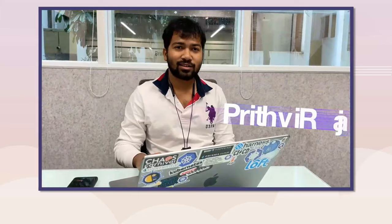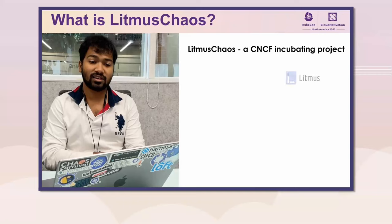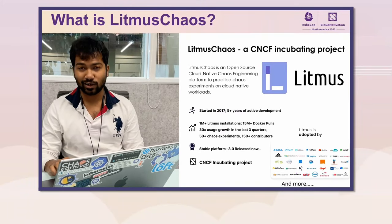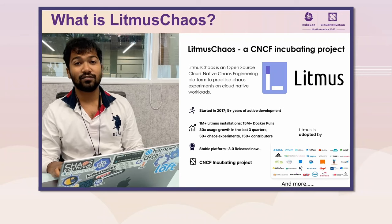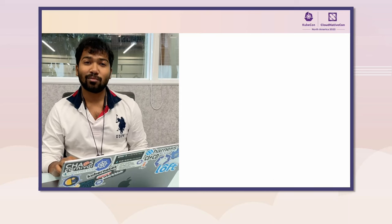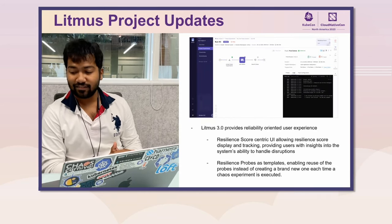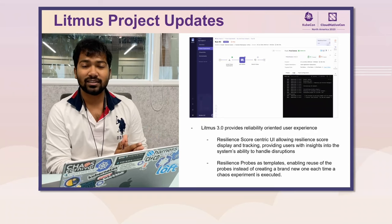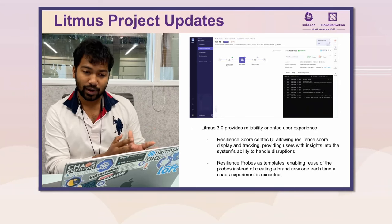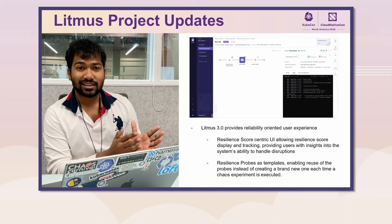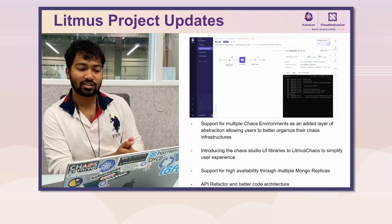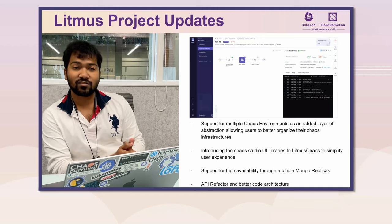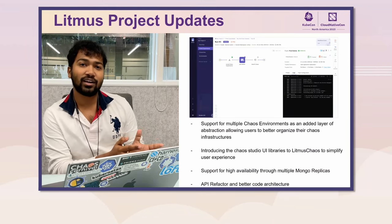Hey folks, this is CNCF Ambassador Prithviraj, and I'll quickly update you about the Litmus Chaos project. Litmus Chaos is a CNCF incubating project which helps you curate chaos engineering in a cloud-native way. It's been six years in development and has achieved 15 million Docker pulls recently. We are live with Litmus Chaos 3.0, and the experience is simplified for the users with a brand new UI. The UI is resilience probe-centric, helping you access managed resilience probes, with support for multiple chaos environments and an organized chaos infrastructure through the introduction of environments.